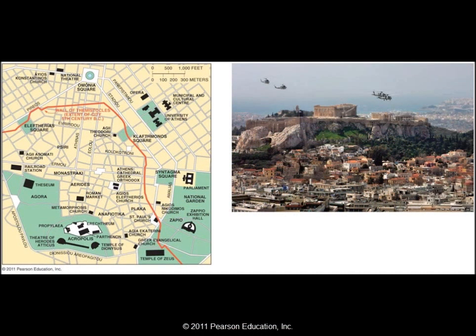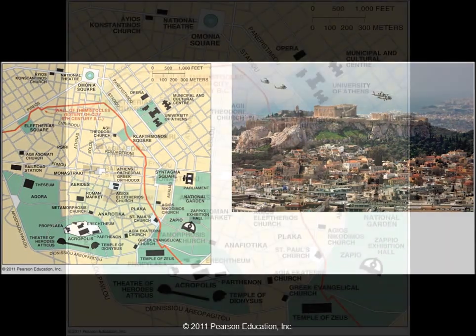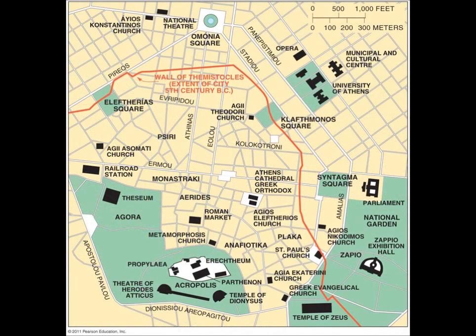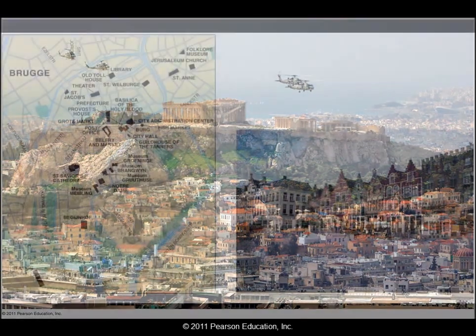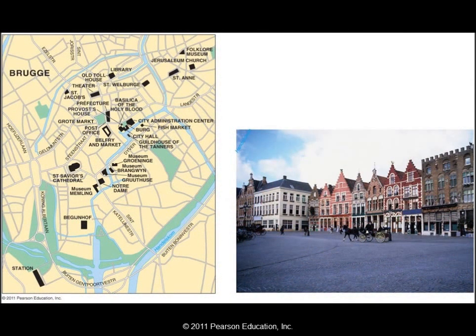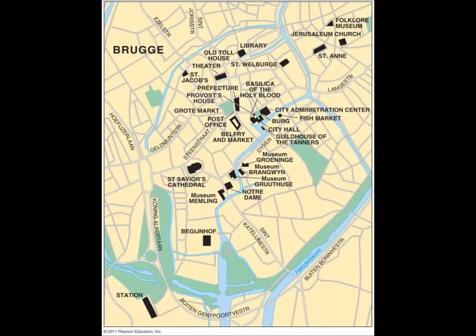Look at the idea of the French long lot system — the reason for these long lots was closeness to water. Look at the idea of social heterogeneity: the larger the city, the more alone you feel because of so many different people, versus feeling more comfortable in a smaller town. Look at the role of the enclosure movement, which was to promote agricultural efficiency in England.